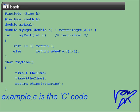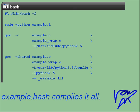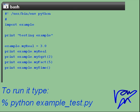Example.c is the C code you wish to call from Python. Example.i is the Swig header. Example.bash compiles it all. To run it, just type Python example underscore test dot py.